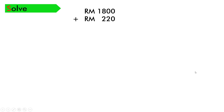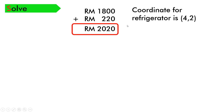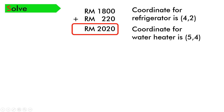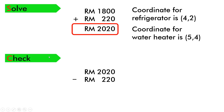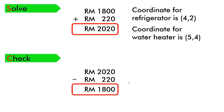Now we solve. RM1,800 plus RM220 will get RM2,020. So the coordinate for the refrigerator is (4, 2), and the coordinate for the water heater is (5, 4). Once we've solved and got the answer, we have to check — kita kena semak. We use the reverse operation — subtraction. RM2,020 minus RM220 will get RM1,800, which is the price for the refrigerator.